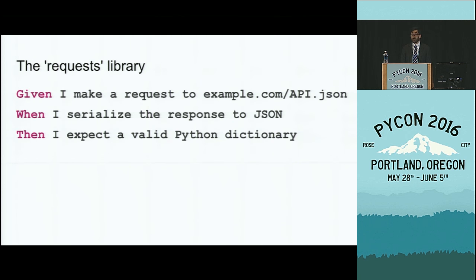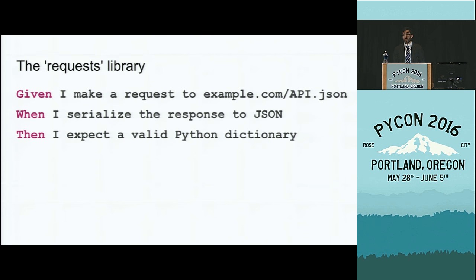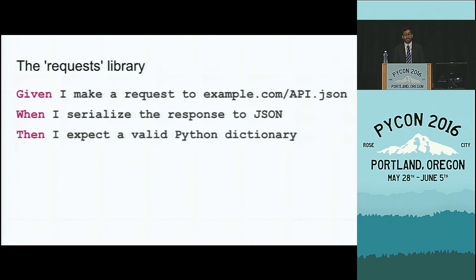Finally, let's say I am implementing a library — the very excellent requests library. Requests has this great feature where I can fetch a URL which returns JSON and it will automatically serialize that JSON into a Python dictionary. So if I were implementing a library for another programmer to use, this is how I might describe the functionality in terms of how someone using my library would accomplish their goals.